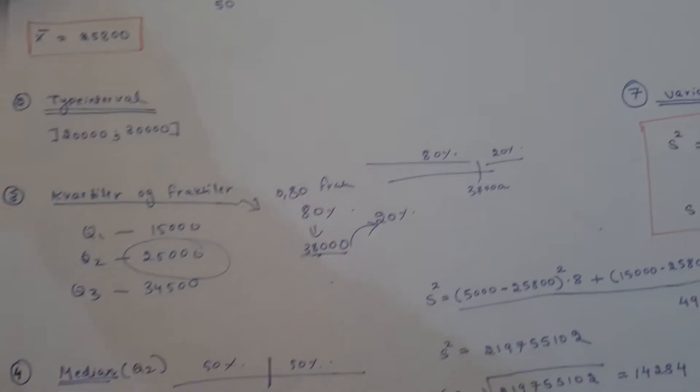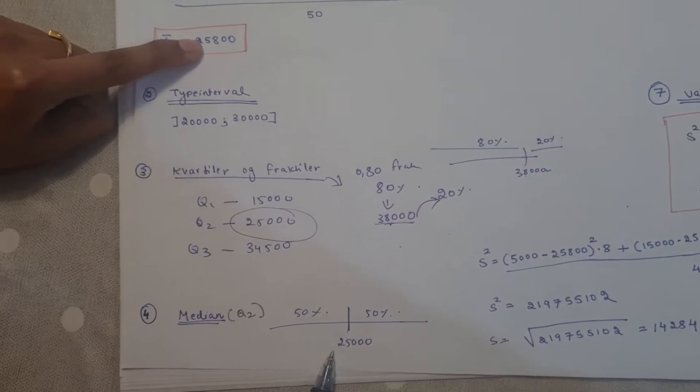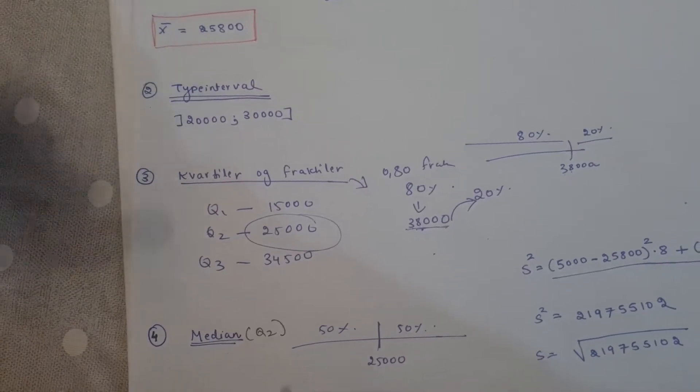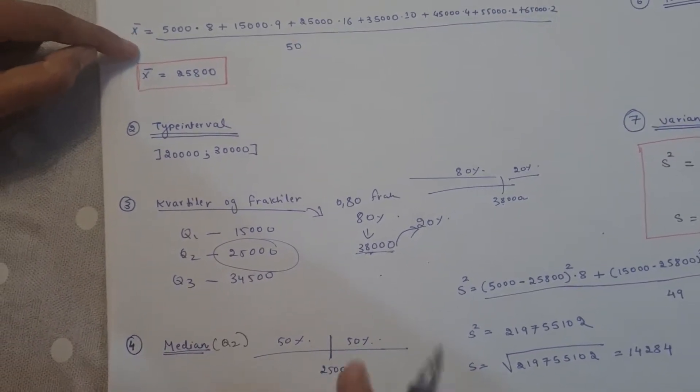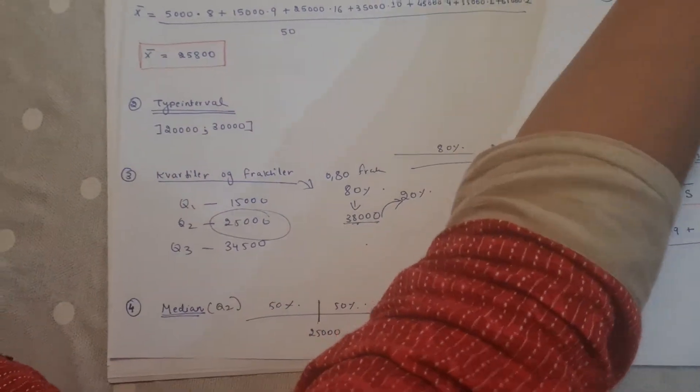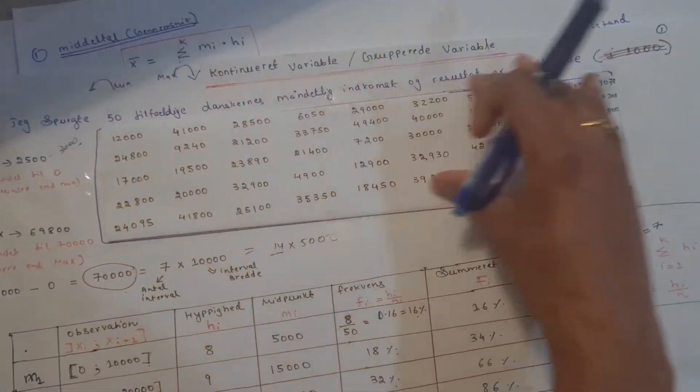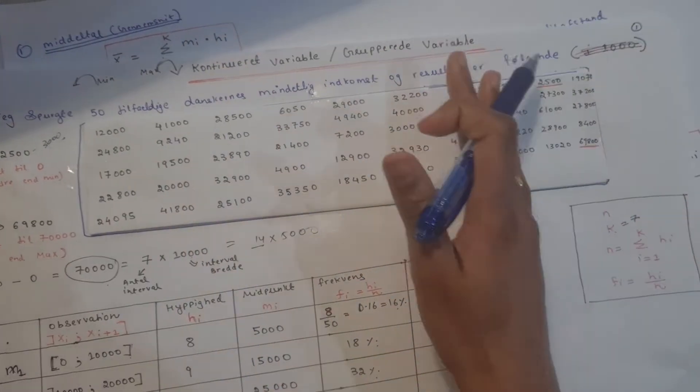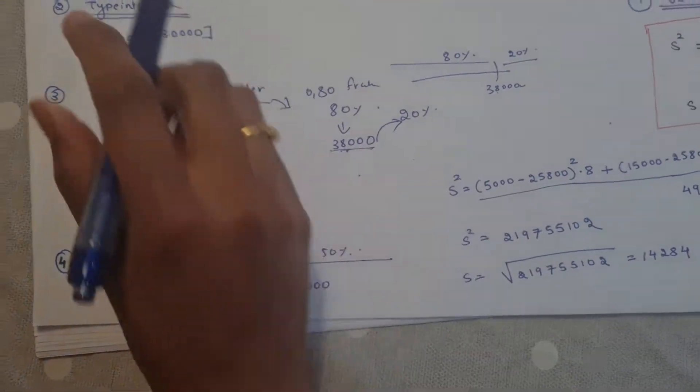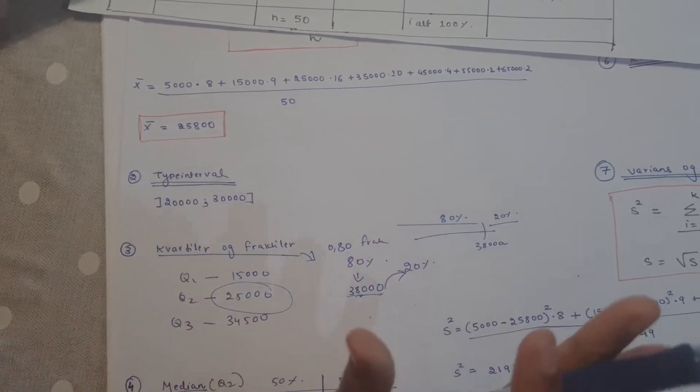Also, we must distinguish between genomsnit (mean) and median. These are two different things. Median means the middle value when you sort the whole raw data in order.